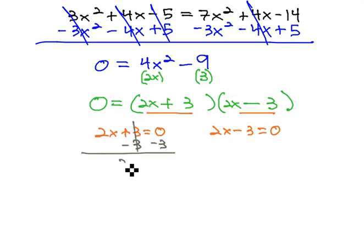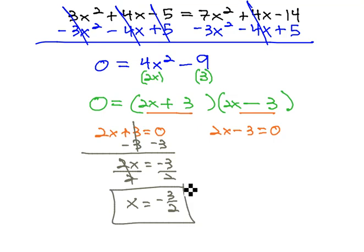By subtracting 3, 2x equals negative 3, and dividing by 2 to get our first answer, x equals negative 3 halves.